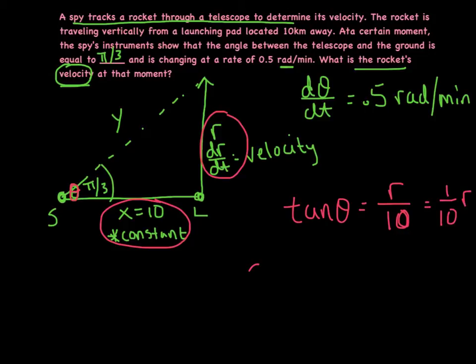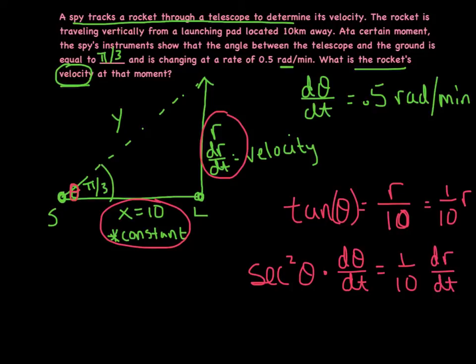We're now ready to derive. We're going to say secant squared of theta times what? Yeah, d theta/dt. Just remind yourself that we did use chain rule there. Theta was the inner function, and it's going to be 1 tenth times r to the 0, which is simply 1 times dr/dt.